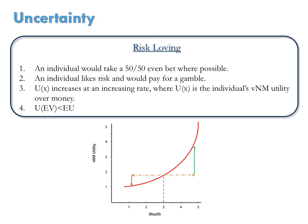Finally, if you chose option 2, you are risk-loving. An individual whose preferences are risk-loving would take a 50-50 bet when possible. These individuals like risk and would even pay for the opportunity to gamble. Their VNM utility function increases with money at an increasing rate.